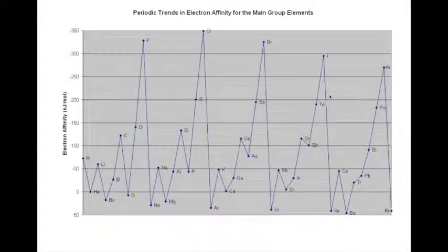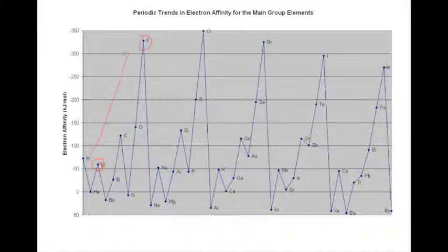So we want to be able to explain this. Let me show you the same data in graphical form, because you may see it drawn like this. These are the electron affinities for elements on our periodic table. Here we have lithium — the first atom in the second period — and here we have fluorine, which is group seven in the second period. Overall, the electron affinities tend to increase, meaning more energy is released and the atom is more likely to accept an electron. However, from lithium to beryllium there's a drop, then it goes up to carbon, then drops between carbon and nitrogen, and continues up to fluorine.